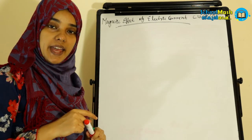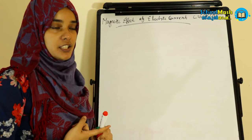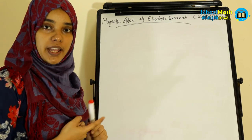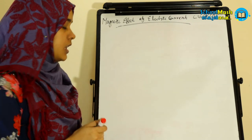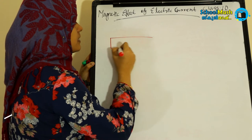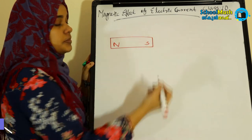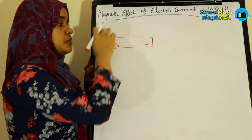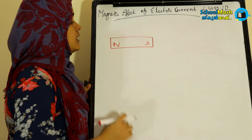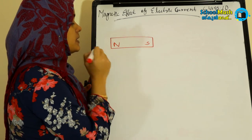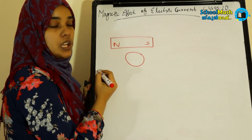Now, the magnetic effect of electric current. The magnetic effect of this magnetic field is related to electric current. This is the bar magnet — it has a North Pole and South Pole. I have a magnetic field and magnetic field lines. I have a compass.